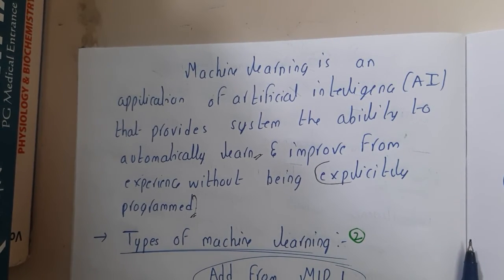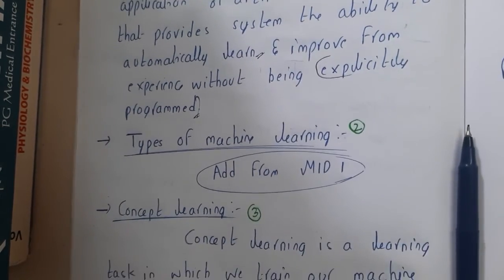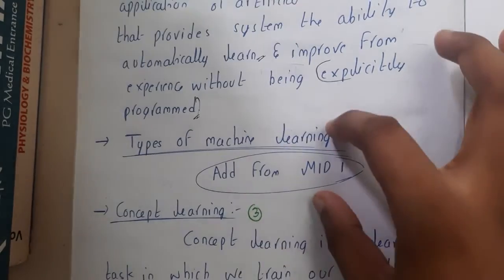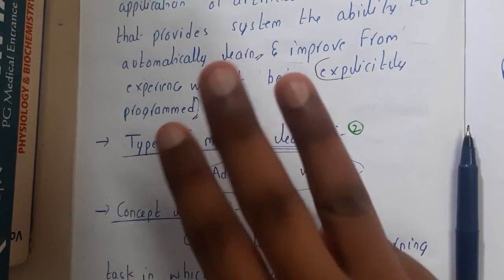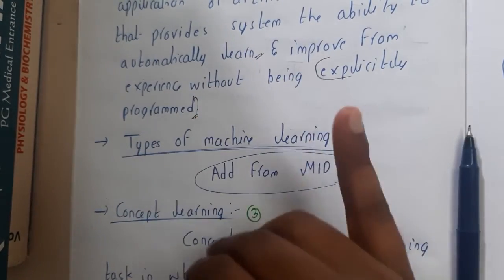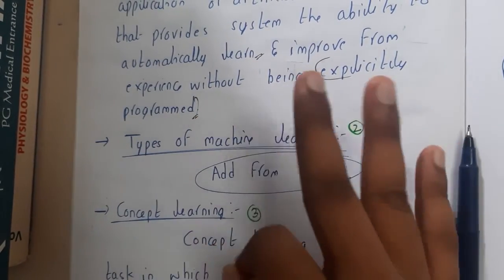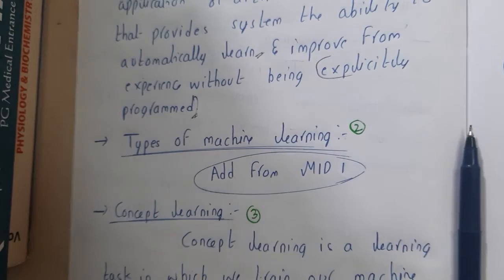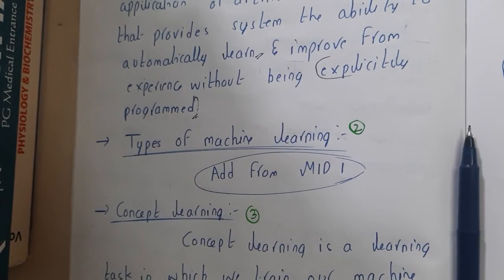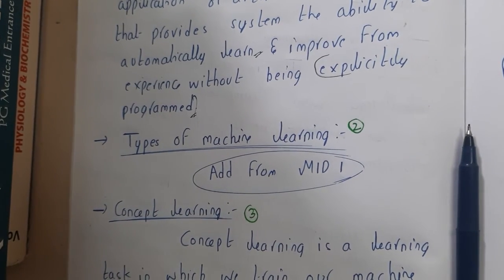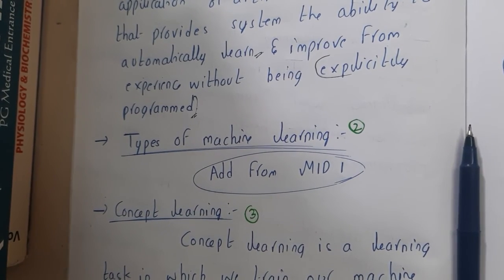I hope everyone got a basic idea about machine learning. In the next lecture we will go through the three types of machine learning: supervised learning, unsupervised learning, and reinforcement learning. Let us meet in the next lecture — thank you for watching.